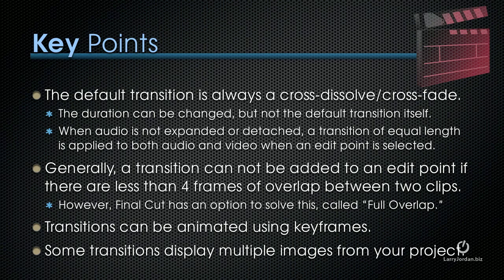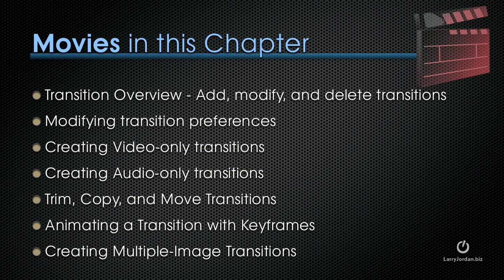Some transitions can be animated using keyframes, and some transitions display multiple images from your project integrated as part of the transition. The movies in this chapter include a transition overview on how to add, modify, and delete transitions, modifying transition preferences, creating video-only transitions, and creating audio-only transitions, how to trim, copy, and move transitions, how to animate a transition with keyframes, and how to create multiple-image transitions.